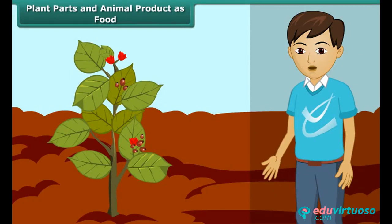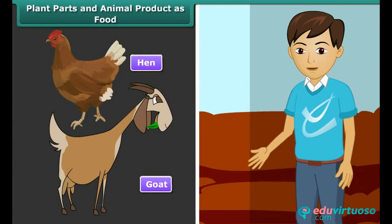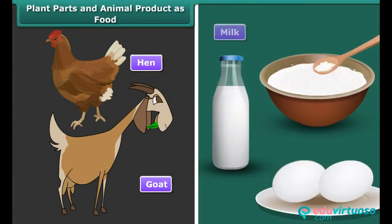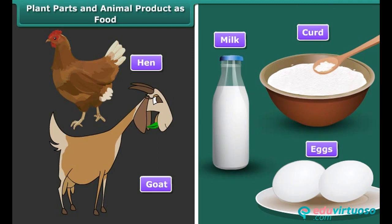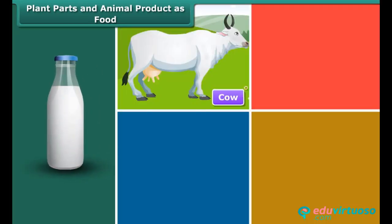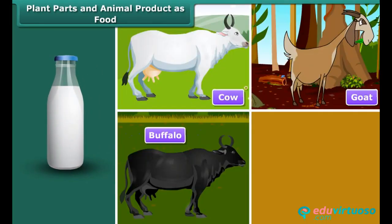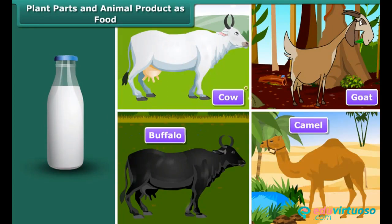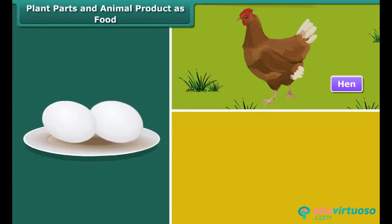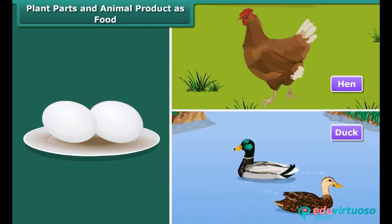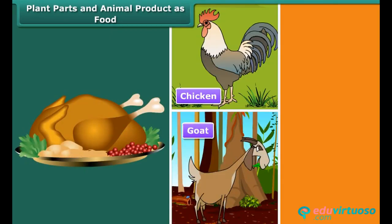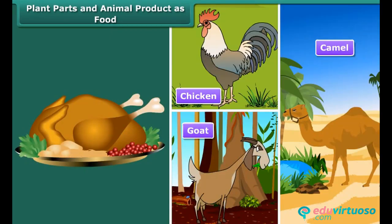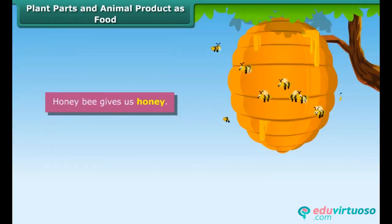Animals also provide us some important products which we eat and drink daily — that is milk, curd, eggs. We get milk from cow, buffalo and goat, and even from camel in desert areas. We get eggs from hens and duck. We also get meat from chicken, goat, camel, etc. Fish and prawn are also eaten. Honeybee gives us honey.